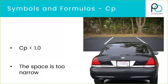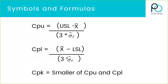That's just about CP. Let's talk about some other indices. Here's one called CPU and CPL — and CPK is just the smaller of those two indices. There are lots of different formulas out there, and we're going to talk in a moment about what a CPK value of, say, 0.7, 0.5, or 2.0 actually means.